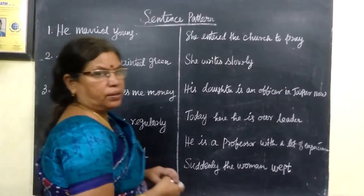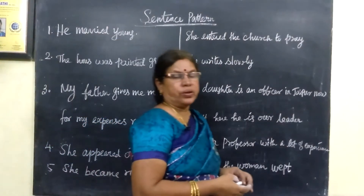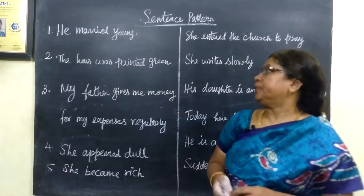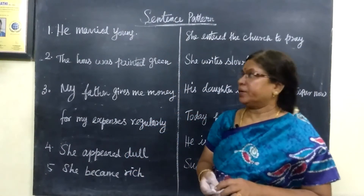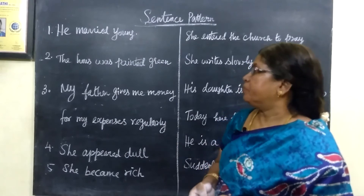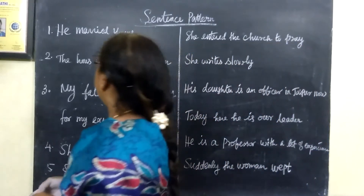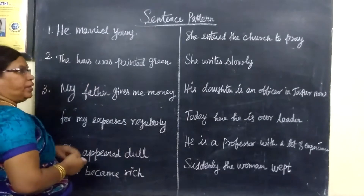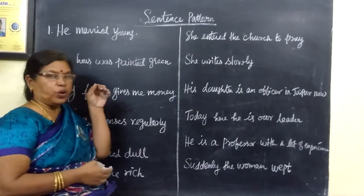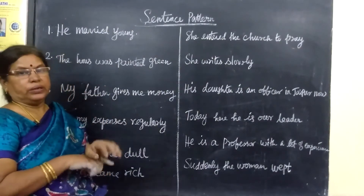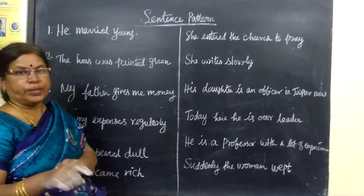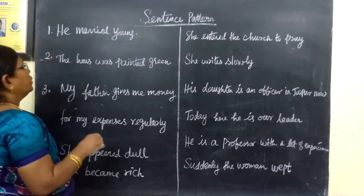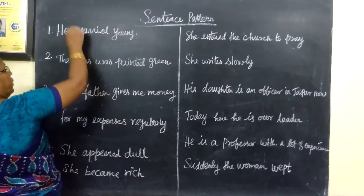In today's class, we are seeing sentence patterns. We will see first: 'He married young.' Sentence pattern is a very easy topic. If it's a direct and indirect topic, it's a very easy sentence pattern. He married young.